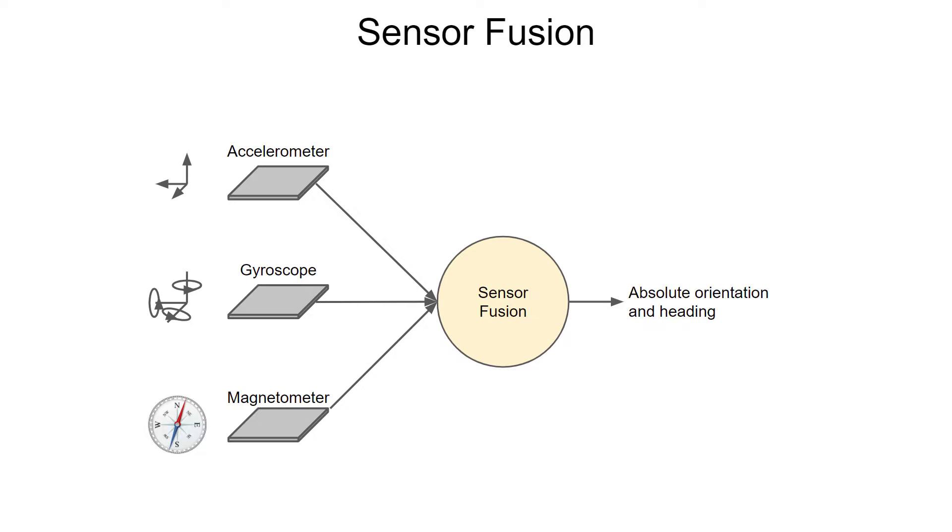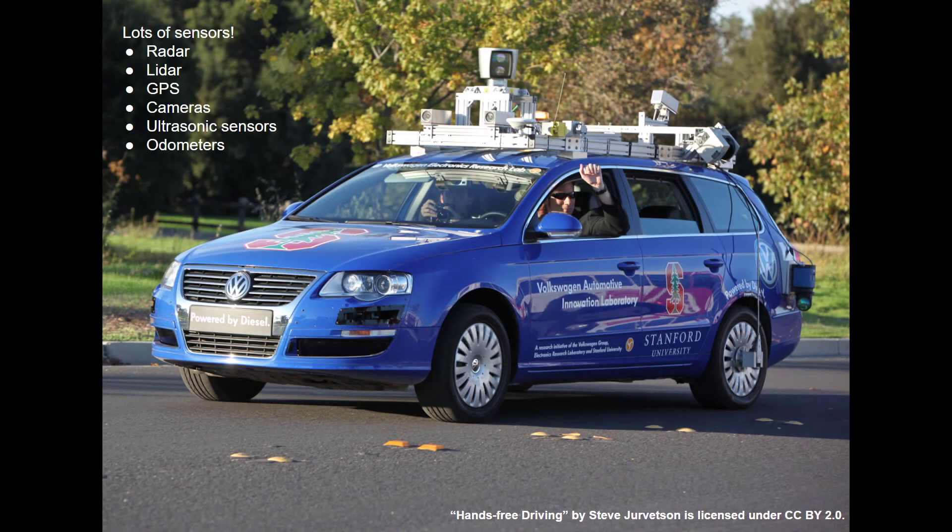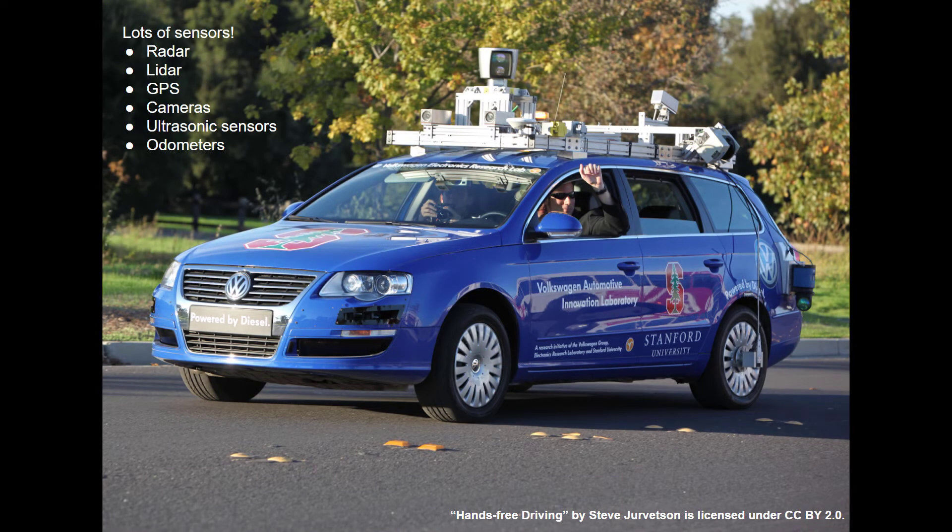Self-driving cars also rely on a suite of sensors and sensor fusion to figure out how to navigate roads and not run into things. You'll see things like radar, LiDAR, GPS, cameras, ultrasonic sensors, and odometers all working together to help the car figure out how to navigate. This is because each of these sensors has limitations and the other sensors work to overcome those limitations. Only with all of the sensors working together can the self-driving program get a clear picture of what's happening on the road ahead.